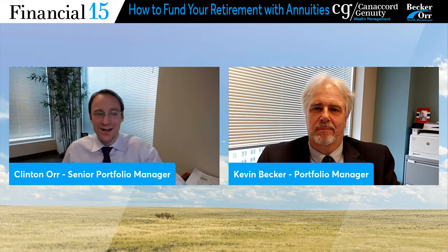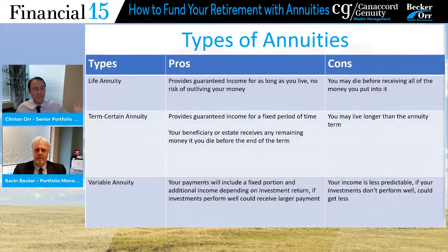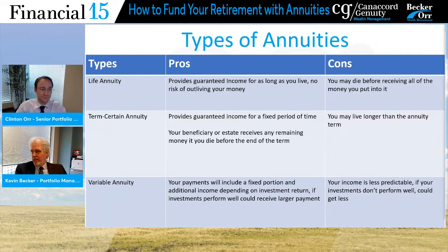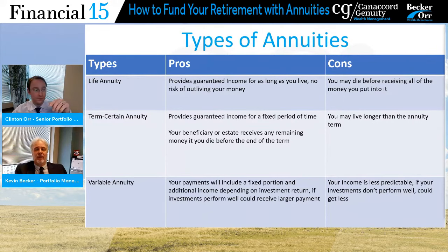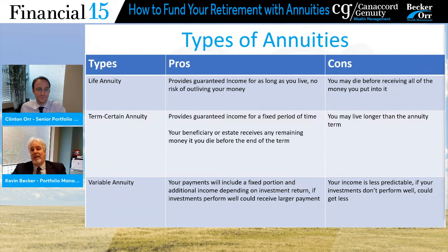There are lots of different types — we'll go over a few without getting into the nitty-gritty details. There's a variety, but let's touch on three big categories. First is the life annuity: it provides you guaranteed income for your life, as long as you live. You have the ability to possibly outlive whatever you put in — that's the big positive, it's guaranteed for your life. The con is that if you die early, you may not get anywhere near what you put in. That's one of the most popular types out there.